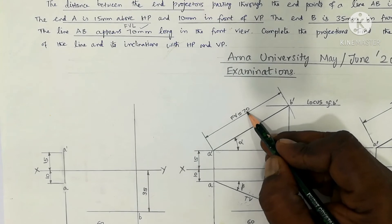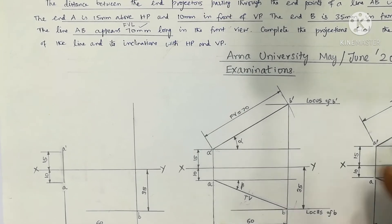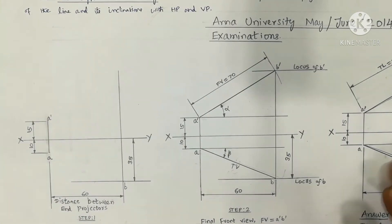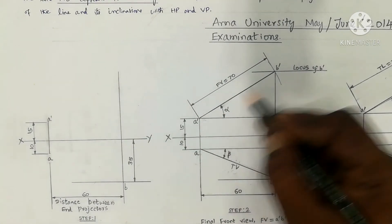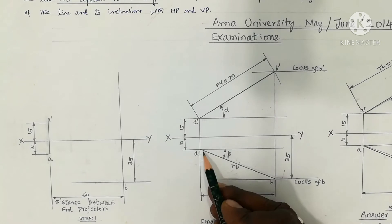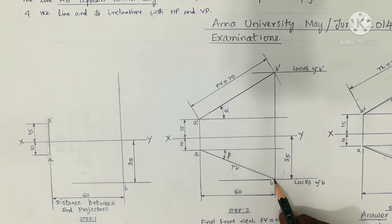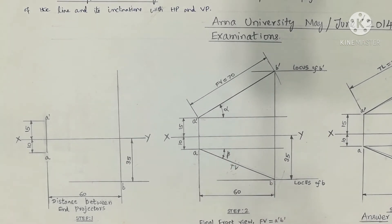The front view is A'B', measuring 70mm. The top view is AB. Now we need to complete the projections and find the true inclination with VP and HP.